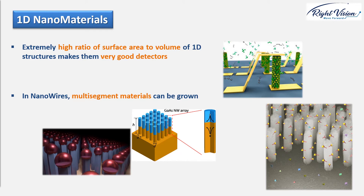Nanowires can be made of metal, semiconductors, or oxide materials, and they can also be multi-segmented. Regarding nanotubes, carbon nanotubes are the most well-known nanotubes with special properties, and there is one lecture dedicated to discussing carbon nanotubes.